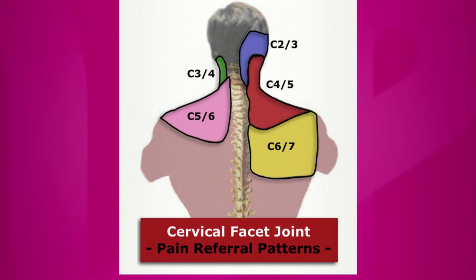The one we have to be most careful about is C1/C2, because — as I'll show later on the model — there's an artery running behind it. So we have to be very careful when placing the needle and use contrast to confirm that we're not putting the needle in the artery, but rather in the joint.